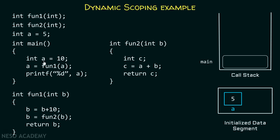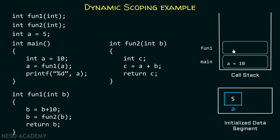This is the local variable of main, so it is also maintained inside the call stack. After that we call fun1 and pass the value of a, which is 10, to the variable b. As control transfers from main to fun1, the activation record of fun1 will be maintained inside the call stack, and this function maintains the variable b because it is local to fun1.